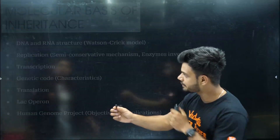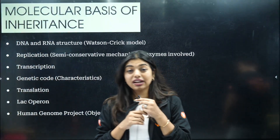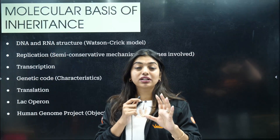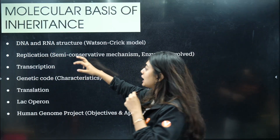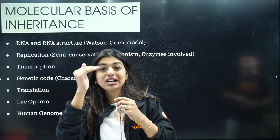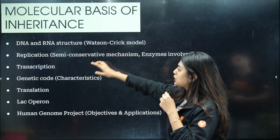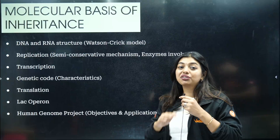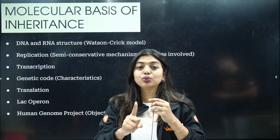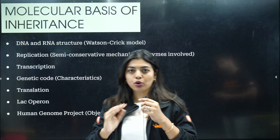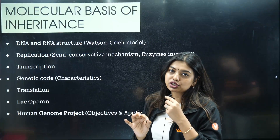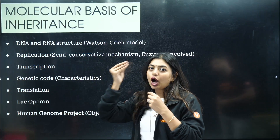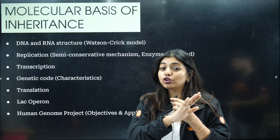Next is molecular basis of inheritance. I have done a three-and-a-half-hour lecture — it's a very big chapter. All the important topics are covered: DNA and RNA structure. Mainly, they will ask you the double helical structure and its salient features. Replication — semi-conservative mechanism and enzymes involved: DNA polymerase, helicase — this question will come. Transcription is very important — learn how to draw that image and know the steps properly. Genetic code — they will ask you the salient features, very important and very easy. Then translation and lac operon. Lac operon — do not skip at all.